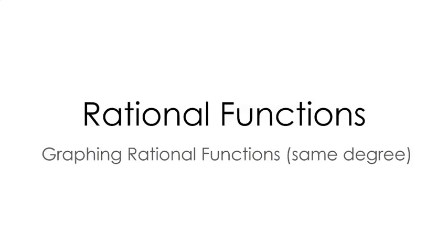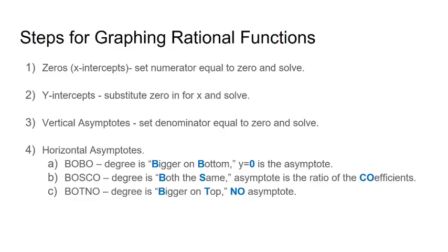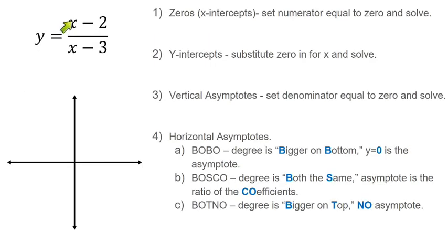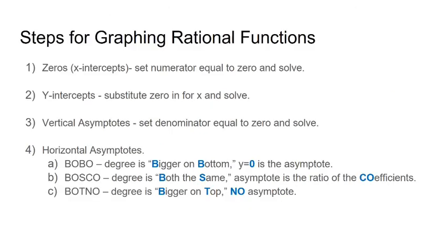In this video we're going to look at graphing rational functions, and I'm putting in parentheses 'same degree.' And what I mean by same degree is, I could jump down to the example we're going to do, when the numerator has the same degree as the denominator. We have a first degree polynomial in the numerator and a first degree polynomial in the denominator.